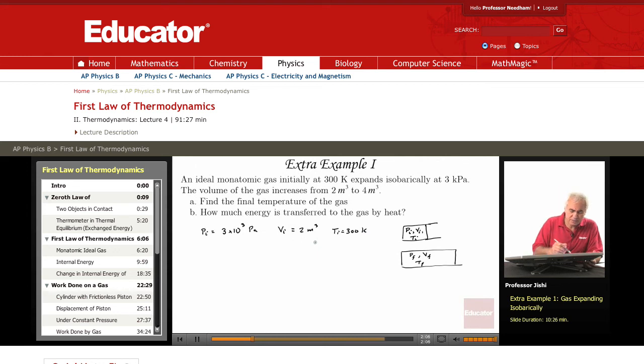Since it expands at constant pressure, this means PF is also the same as PI, 3 times 10 to the 3 Pascal. VF is 4 meters cubed. So what is TF, the final temperature? This is part A.